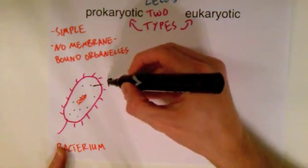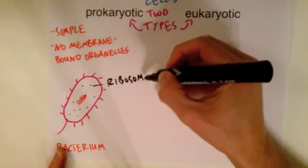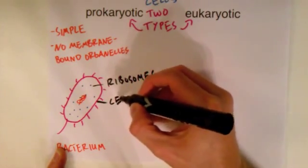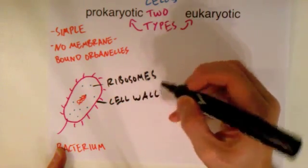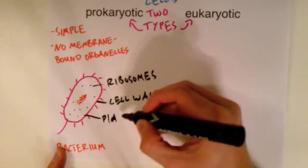The little dots are the ribosomes. On the outside, there is a cell wall. There is also a plasma membrane.